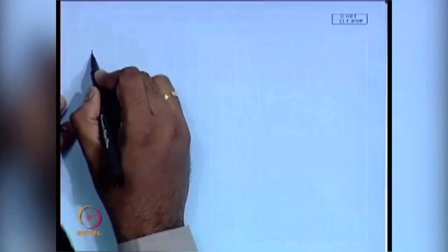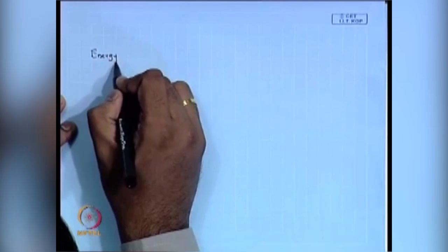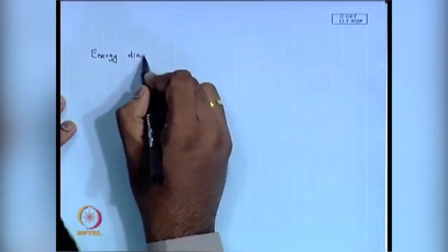We were discussing why electron-rich alkene gives you non-stereo specific and non-regio specific product, and electron-deficient alkene gives you stereo specific and regio specific product. To understand that, we said we will first write an energy diagram to see how these molecules will be.